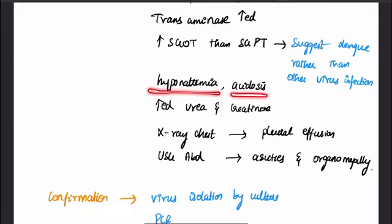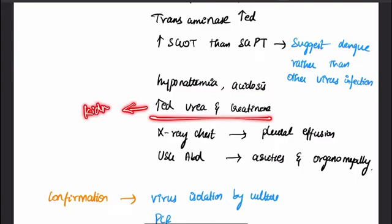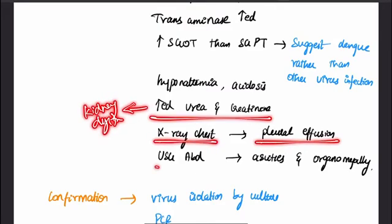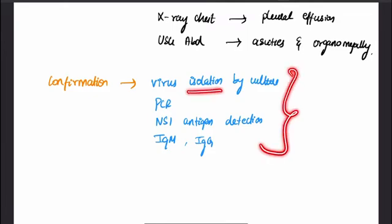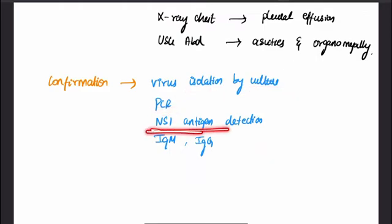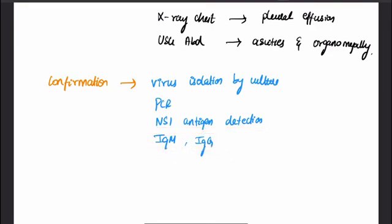There is also hyponatremia leading to acidosis, and increased urea and creatinine indicating kidney dysfunction. Chest X-ray shows pleural effusion; USG abdomen can show ascites and organomegaly. Confirmation of Dengue is done by virus isolation by culture, PCR (polymerase chain reaction), Dengue NS1 antigen detection, and IgM and IgG antibody tests. IgM appears early in infection, whereas IgG appears late — about 2 to 3 months after IgM disappears.